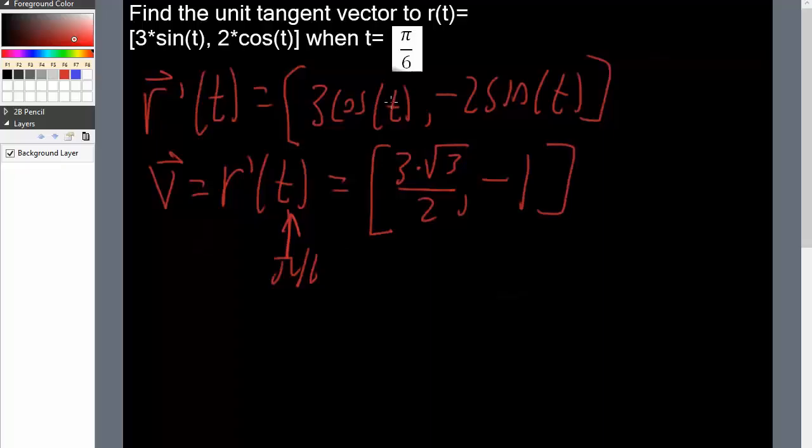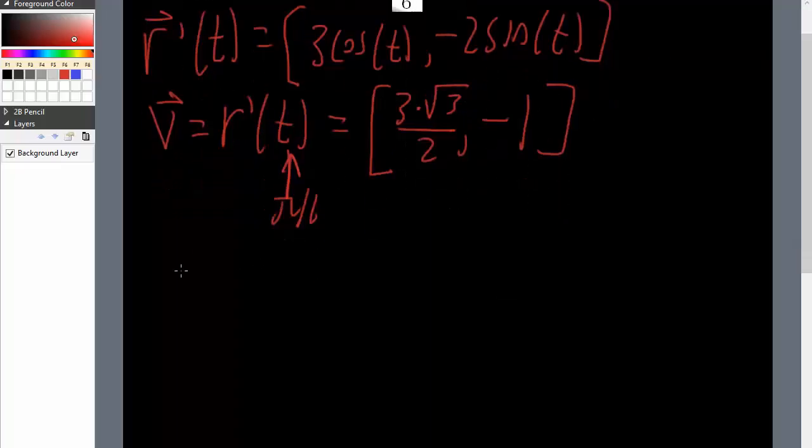We simply insert pi over 6 here and pi over 6 here and that's what we had. And the next step is to get the unit tangent vector which would equal v divided by the magnitude of v.